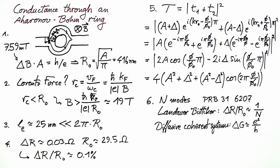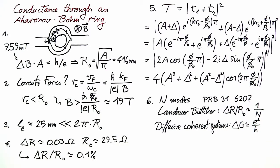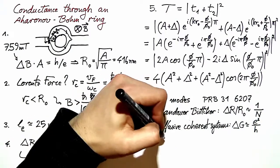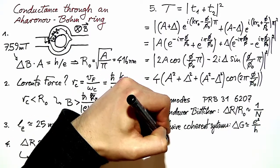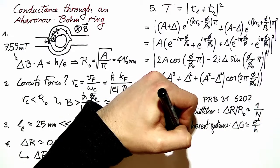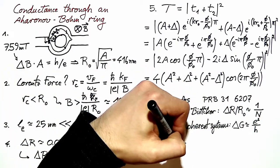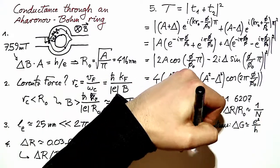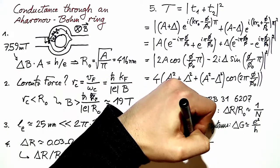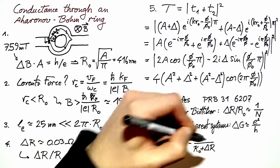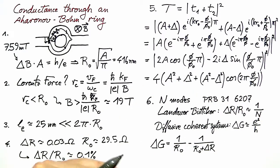Now we can, within this picture of amplitude and conductance, look back at the data of Webb and coworkers and try to estimate what is ΔG in this case. ΔG we can estimate it as 1 over R₀ minus 1 over R₀ plus ΔR, such as to transform the resistance oscillation amplitude into a conductance amplitude.